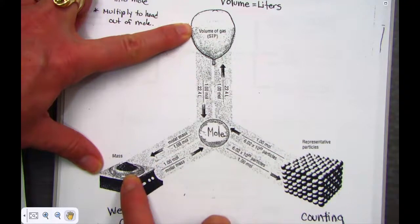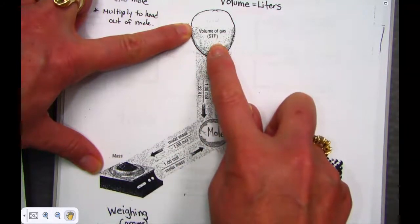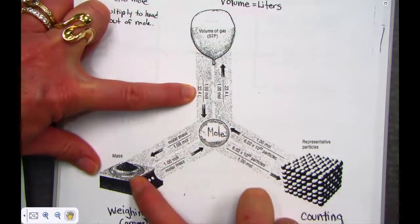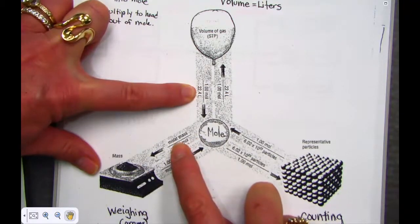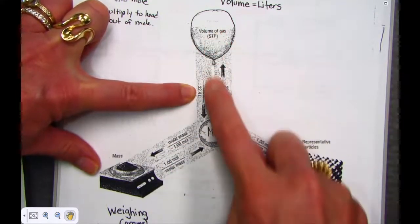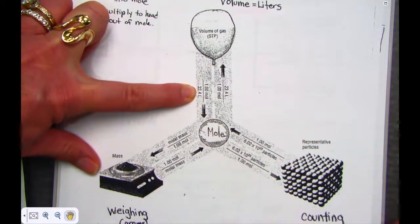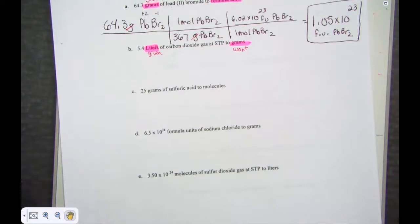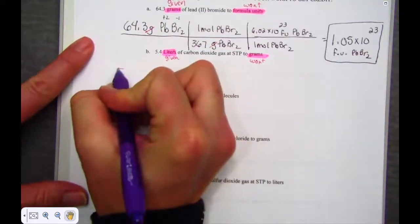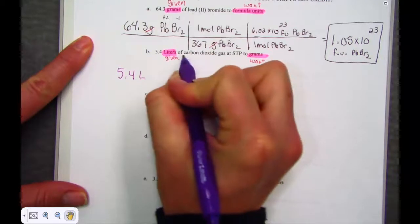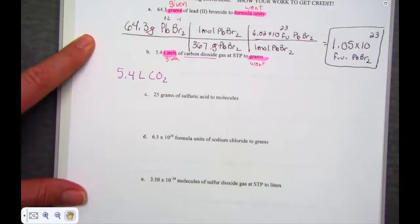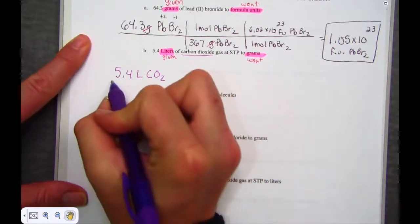I'm going to divide to head in and multiply to head out. To change volume of gas into moles of gas, we use our molar volume conversion of 22.4 liters. To go from moles back out to the scale, we need the molar mass. We divide by molar volume, multiply by molar mass. Our given quantity is 5.4 liters CO₂.